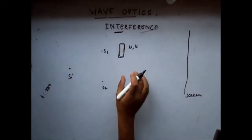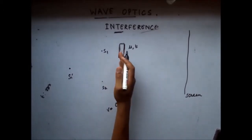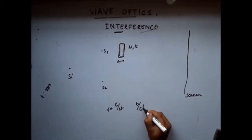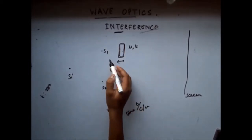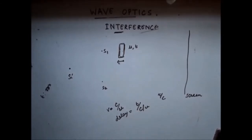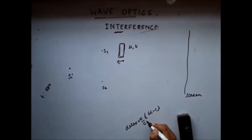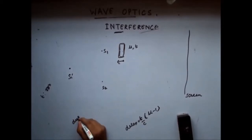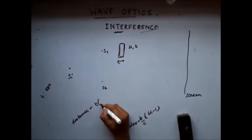Let's find out how much time delay this introduces. The velocity here is C by mu. So the time taken by the light wave to travel this distance is T divided by (C by mu), which equals mu·T divided by C. When the glass slab wasn't there, the time would simply be T by C. So the delay produced by the glass slab is (mu minus 1)·T by C. In terms of distance, multiplying this delay by C gives the equivalent extra distance: T(mu minus 1).